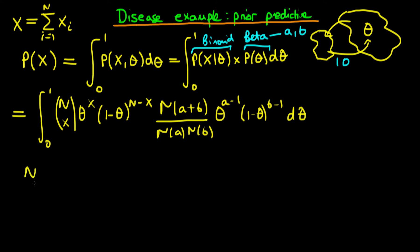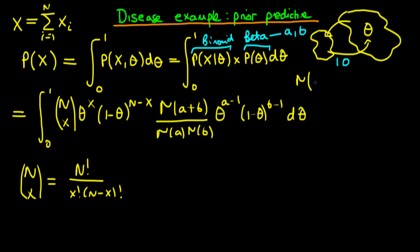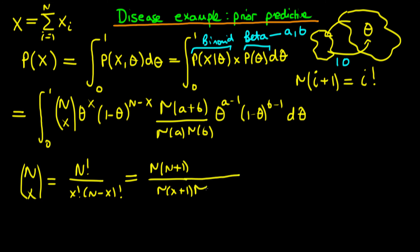Note that C(n,x) is shorthand for n choose x, which is n factorial over x factorial times (n minus x) factorial. Since the gamma function is the continuous version of the factorial, with the property that gamma(i+1) equals i factorial for integer i, we can rewrite C(n,x) as gamma(n+1) divided by gamma(x+1) times gamma(n minus x plus 1). This allows us to rewrite the expression as gamma(n+1) divided by gamma(x+1) times gamma(n minus x plus 1) times gamma(a) times gamma(b), with gamma(a+b) in the numerator.